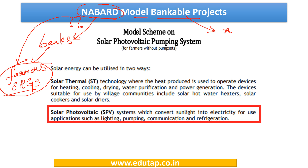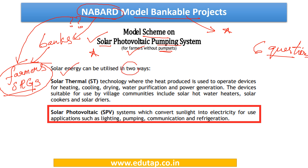Today we are going to discuss six questions taken specifically from the Model Scheme on Solar Photovoltaic Pumping System — a project for farmers without pump sets. They are going to provide funds for solar pumps. We know that solar energy can be used in two ways: one is solar thermal technology and the other is solar photovoltaic systems, that is SPV systems. You are going to come across the term SPV in many places, so you need to know what it means.